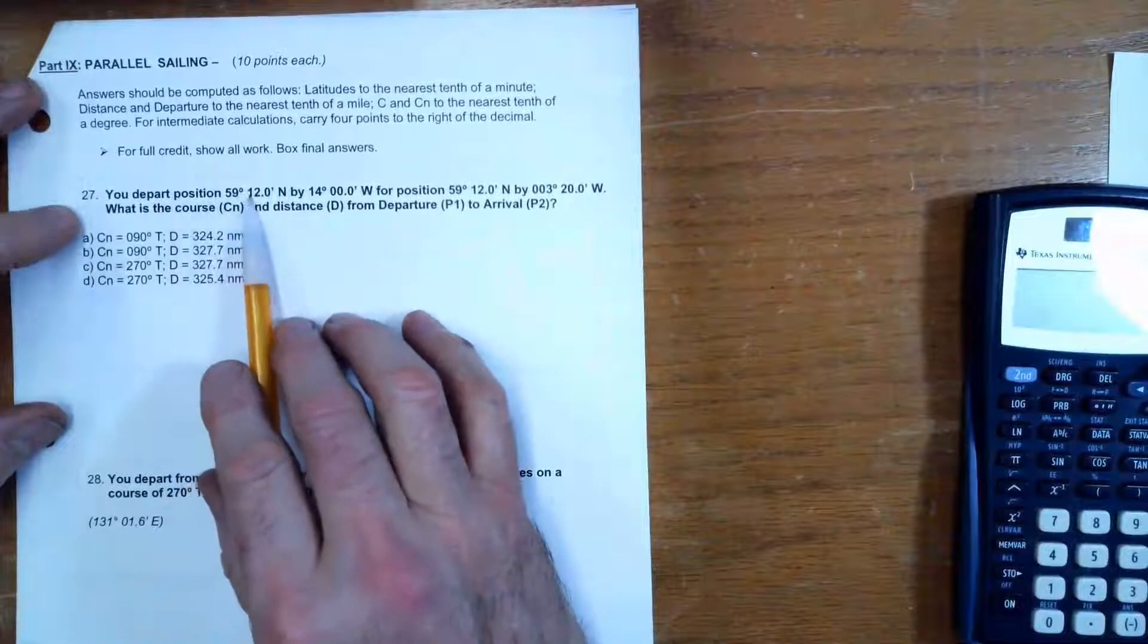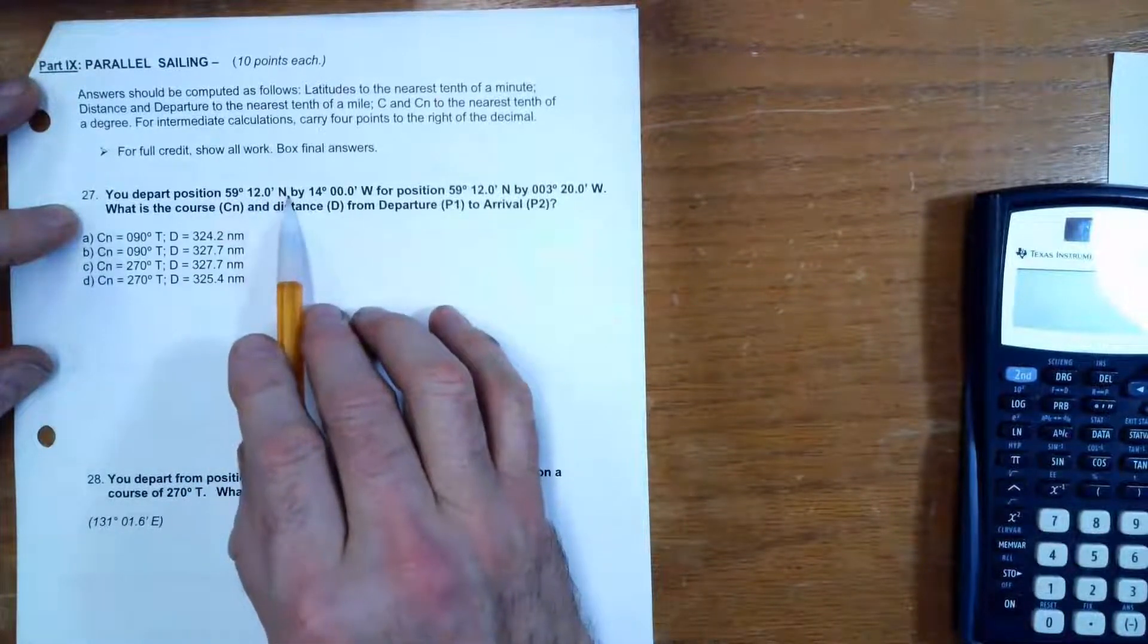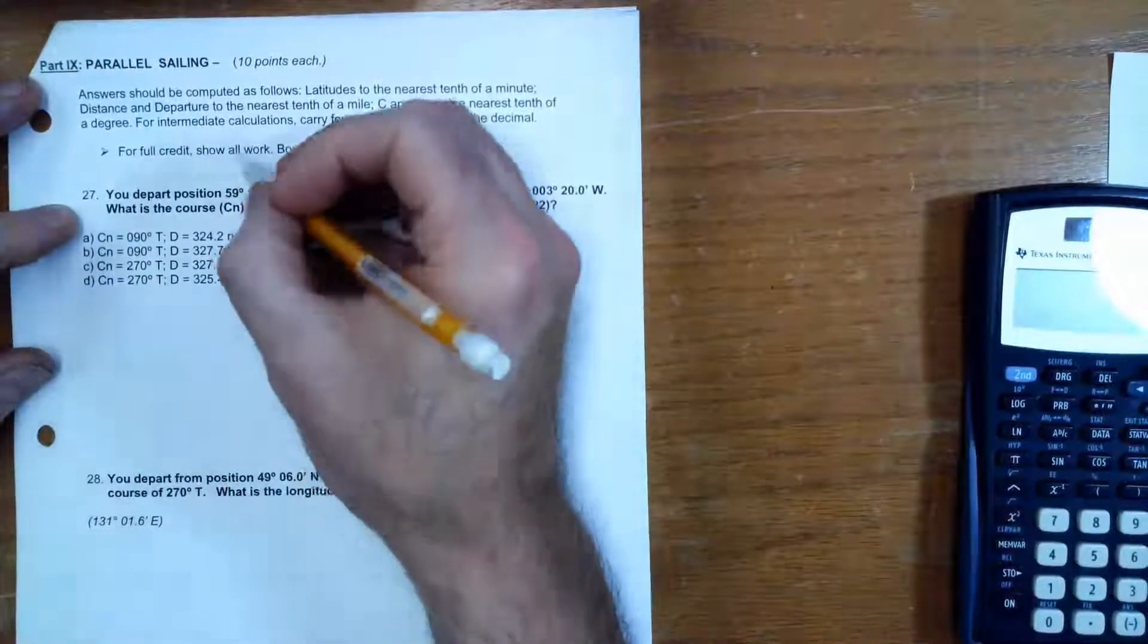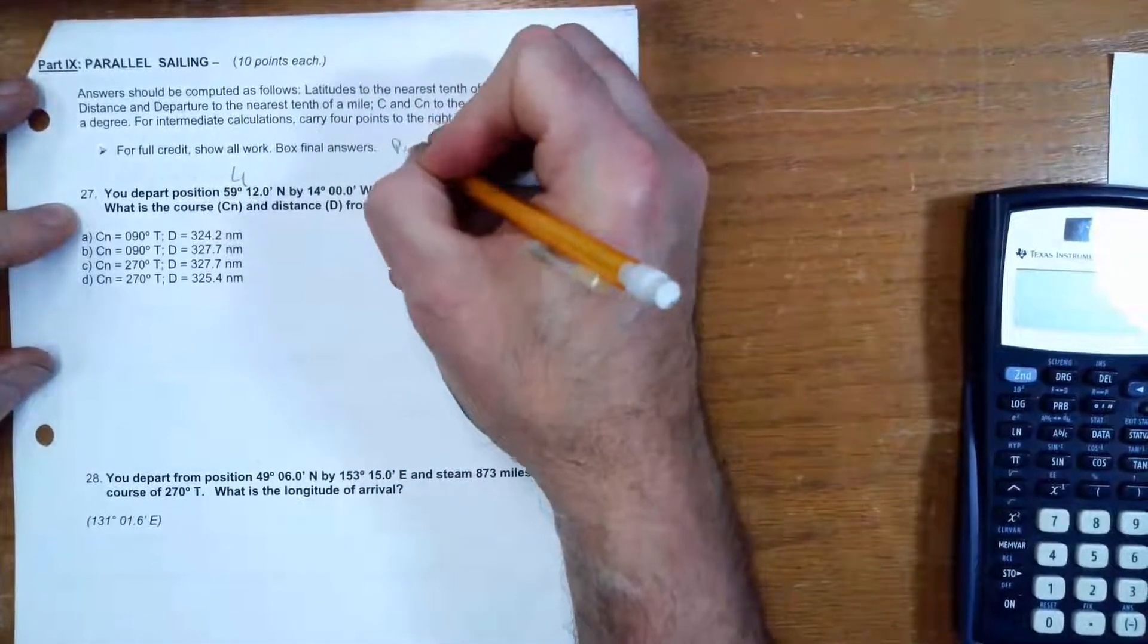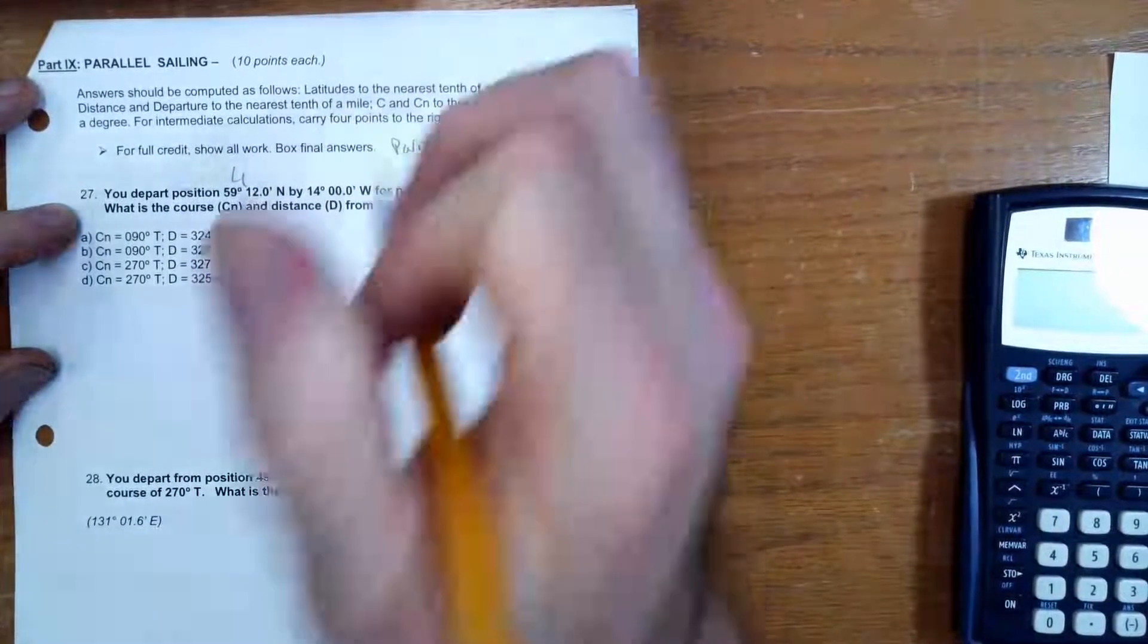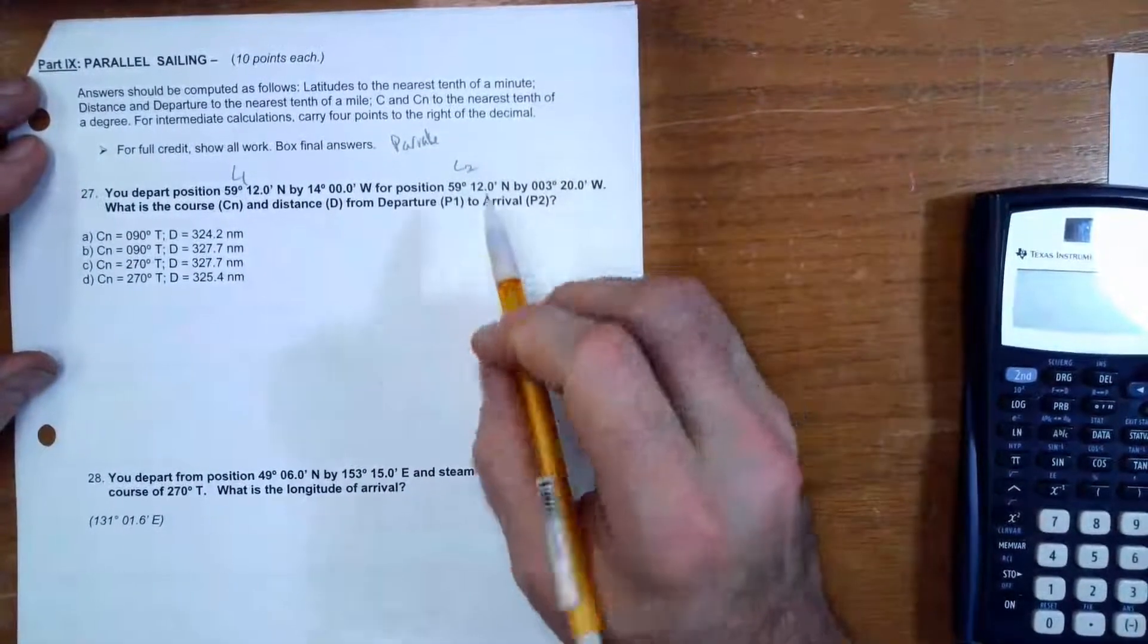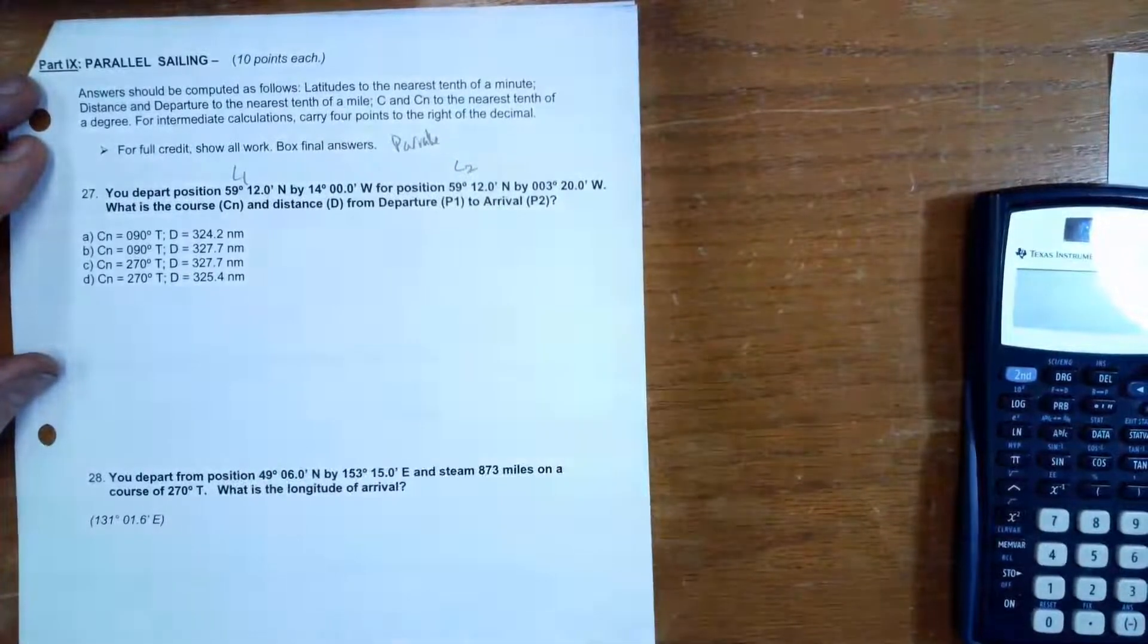We're in position 59°12' north by 14° west, and we're going to 59°12'. Oh look, that's L1, that's L2, but they're the same number. This is parallel sailing. So we're going from 14° west to 3°20' west.